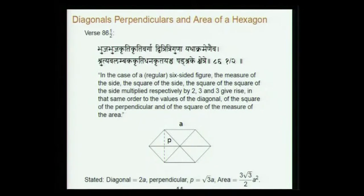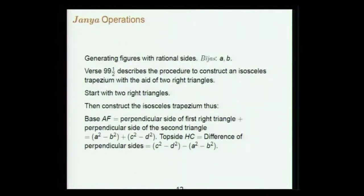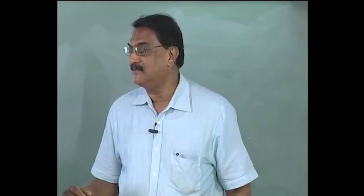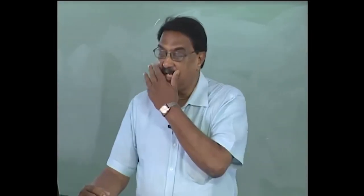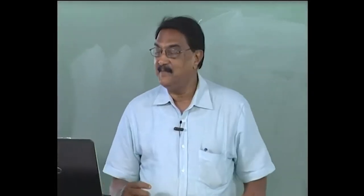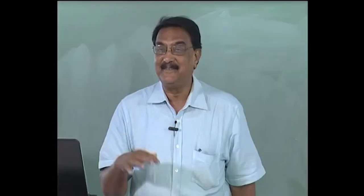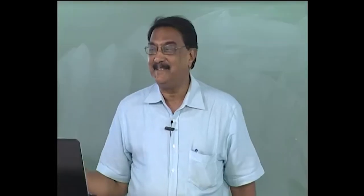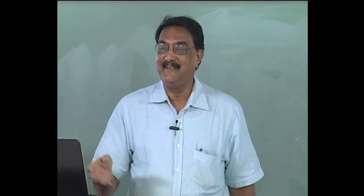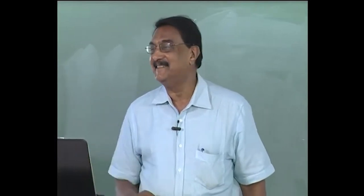He talks of the janya operations — generating triangles with rational sides, quadrilaterals, and various figures with rational sides. As pointed out, it is like the generation of valid words in grammar, the same idea working here for generating valid rational figures.